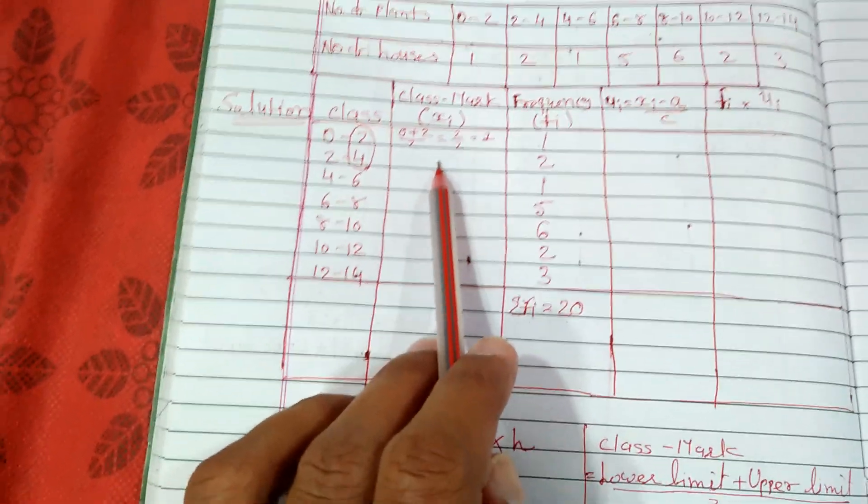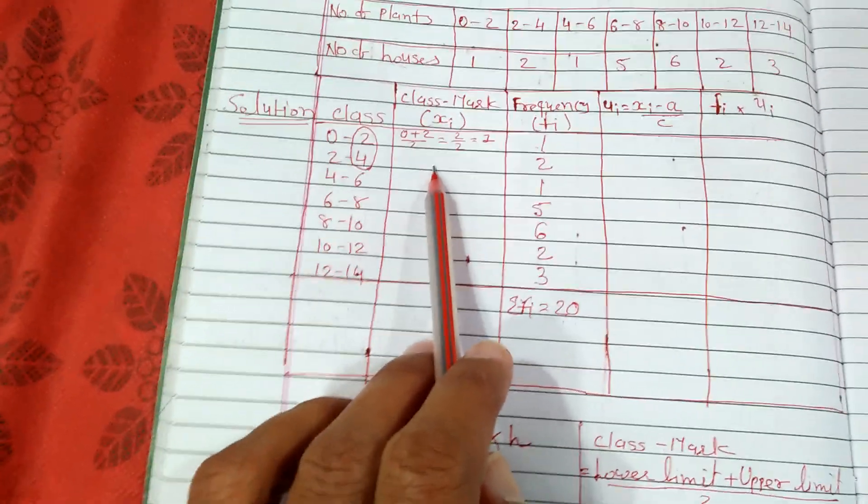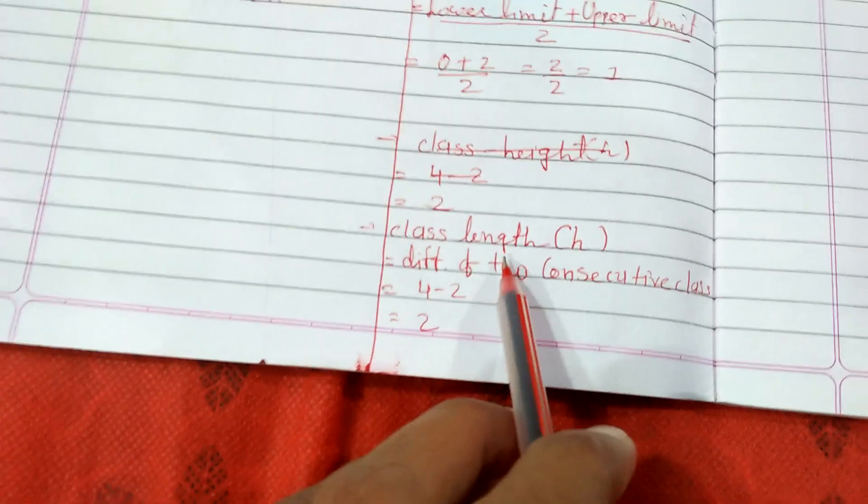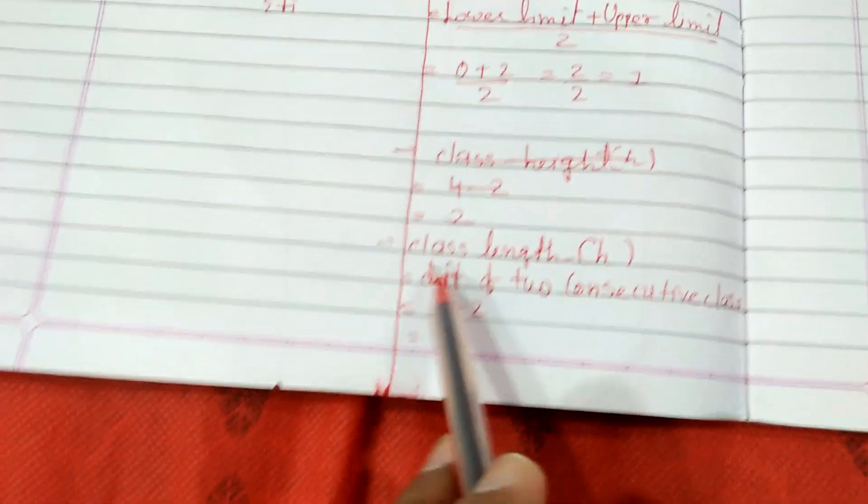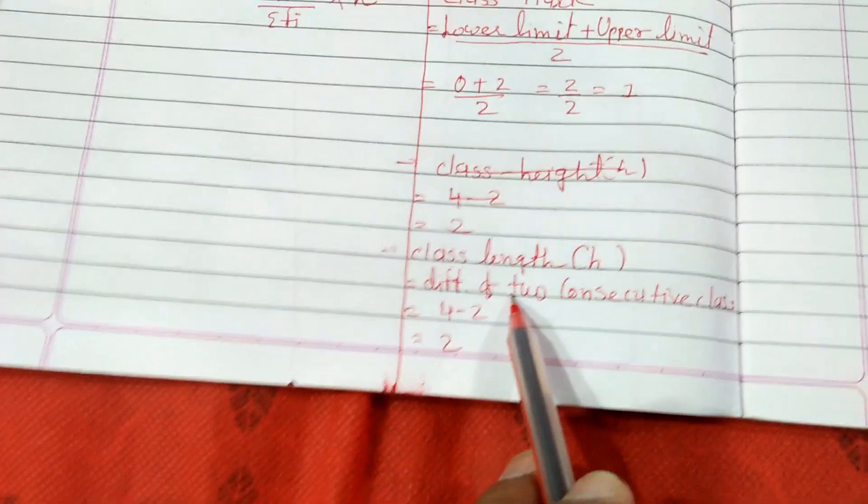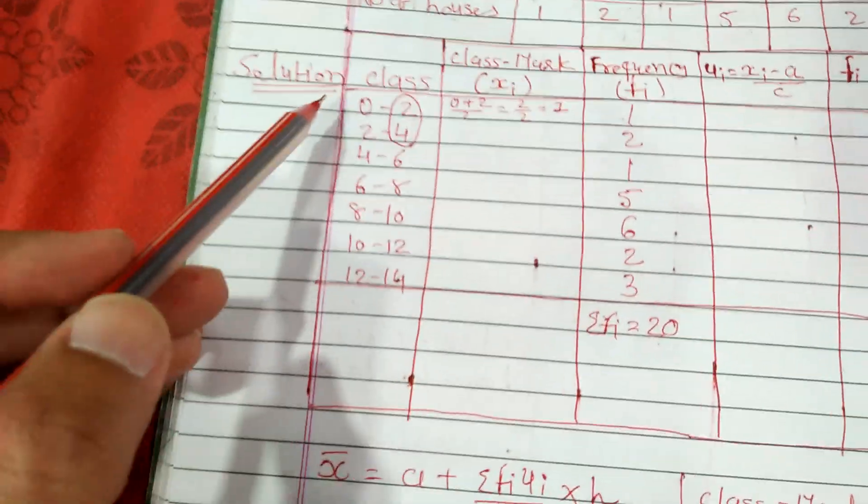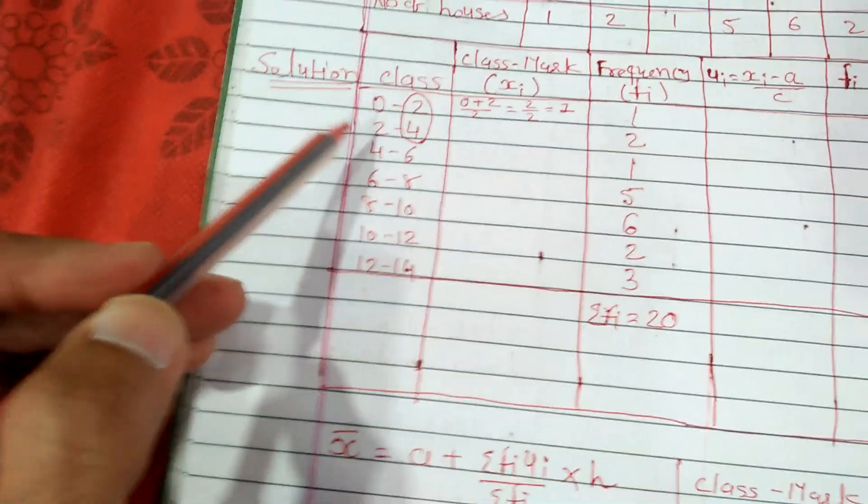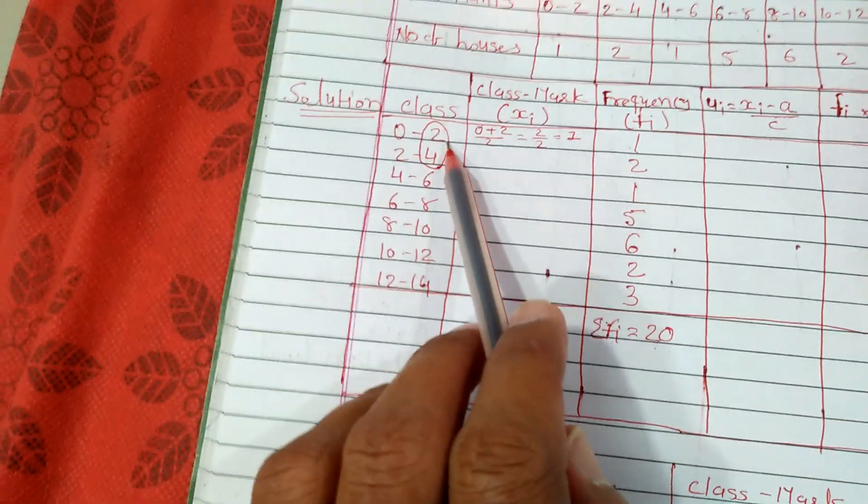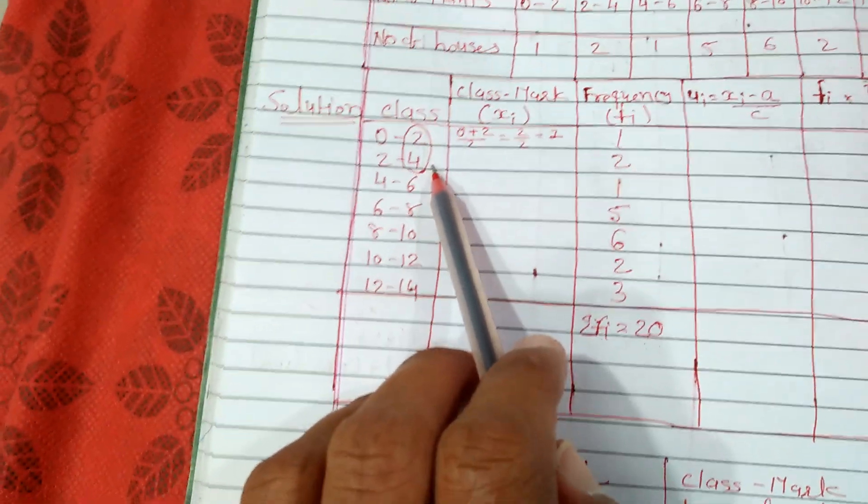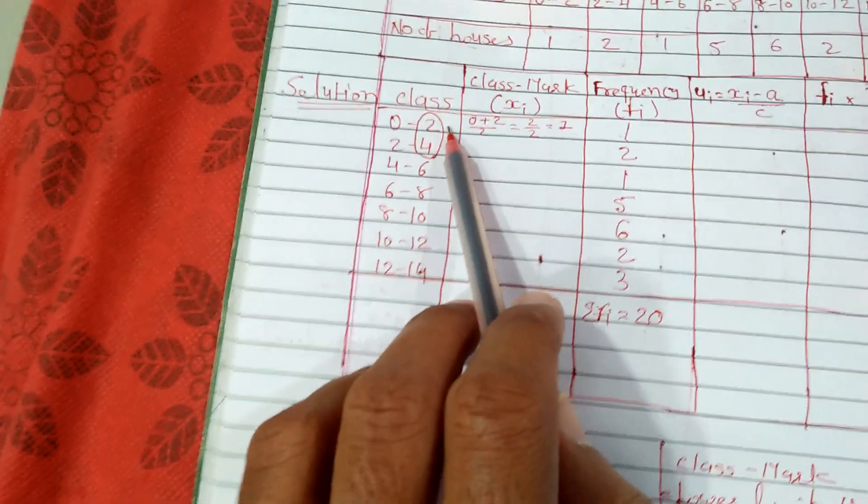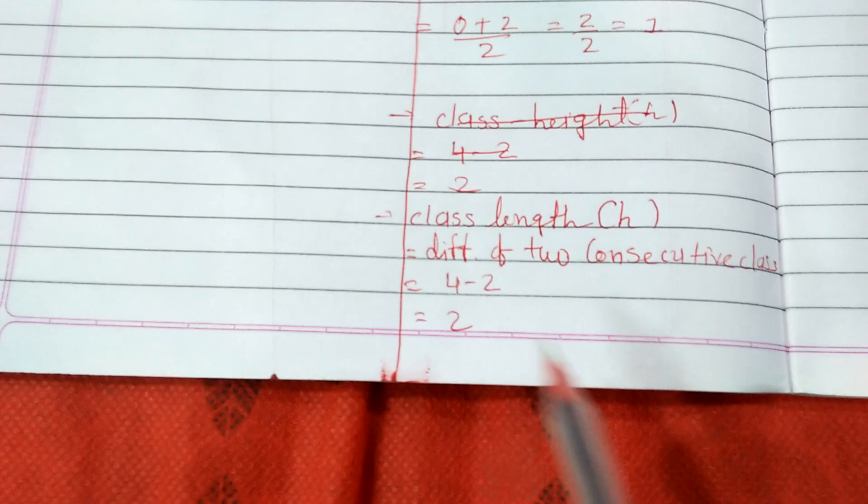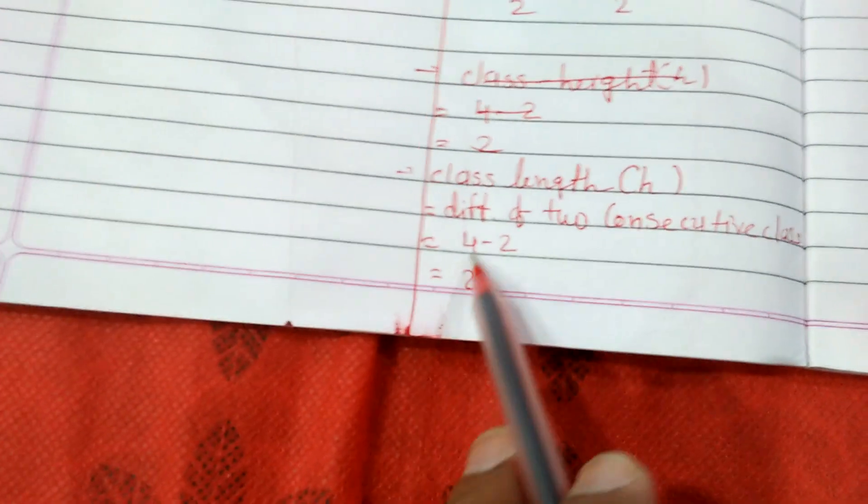Now to find the class mark for the second class, we will find out class length, which is represented by H. Class length is nothing but the difference of two consecutive classes. If I take class 0 to 2 and 2 to 4, for this class upper limit is 2 and here upper limit is 4. 4 minus 2 equals 2. So we have class length 2.